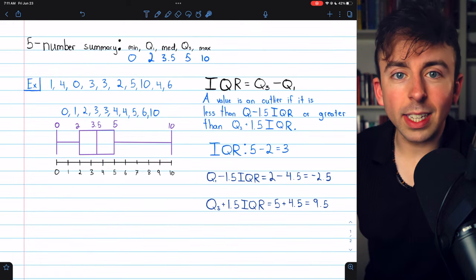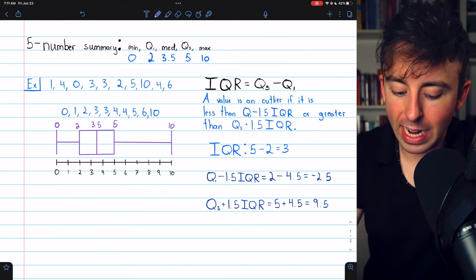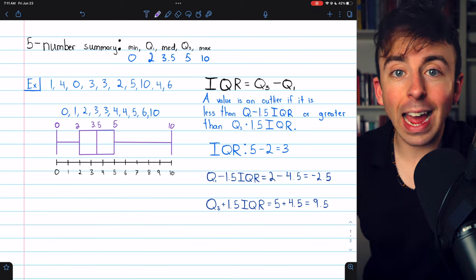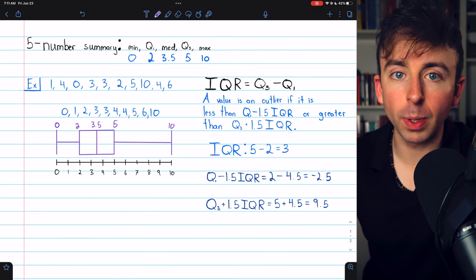You may also want to consider a modified box plot, where we can use our interquartile range, the distance between Q1 and Q3, to find outliers, which we represent differently in a modified box plot.